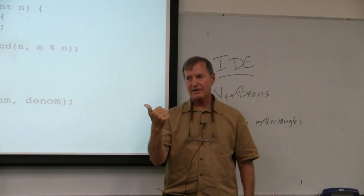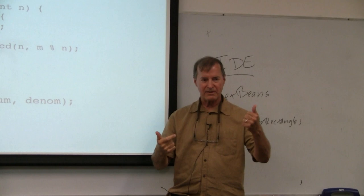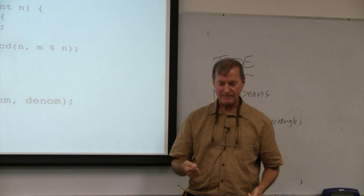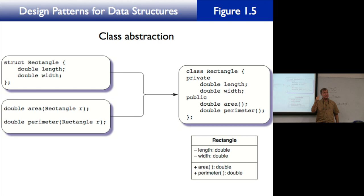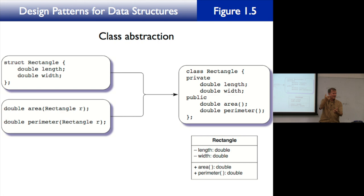So the four kinds of abstraction we've had so far are: type and structure on the data side, and statement and procedure on the programming side. Now, when we combine type and structure with statements and procedures, we get the next level: class abstraction.